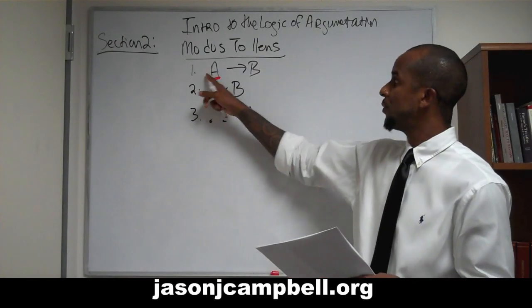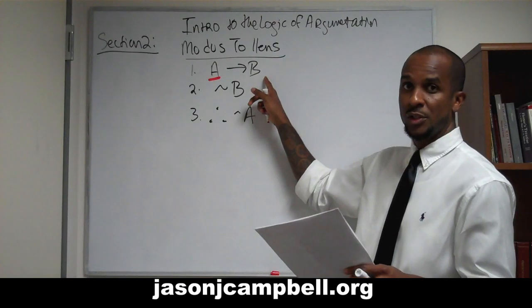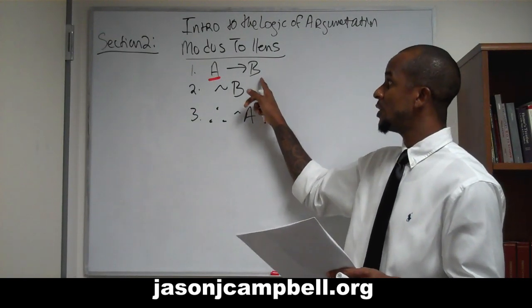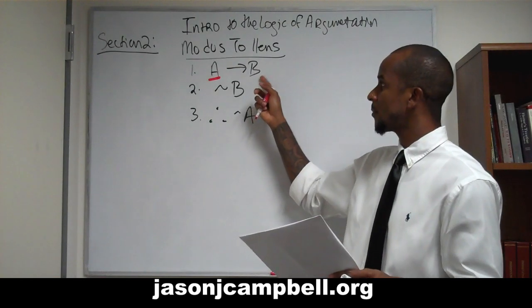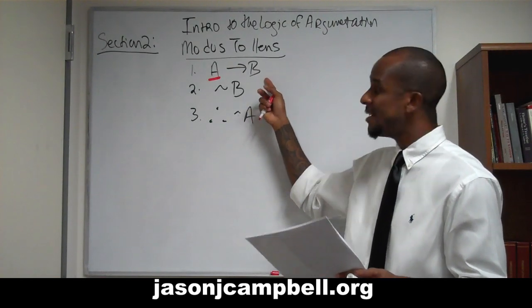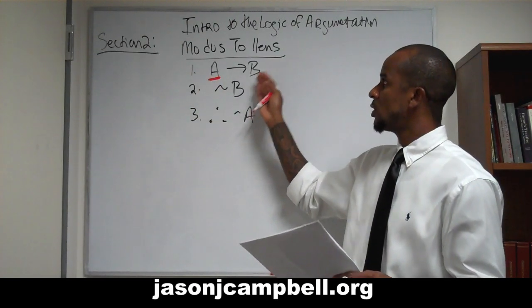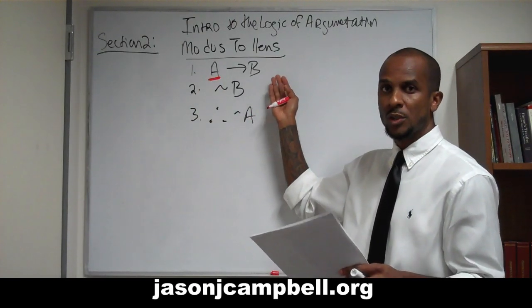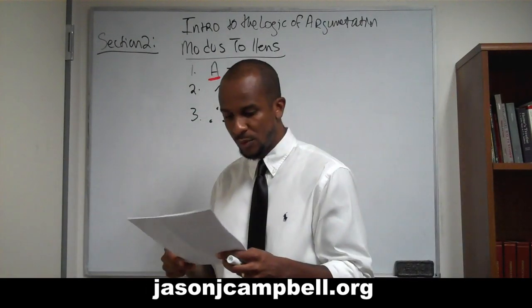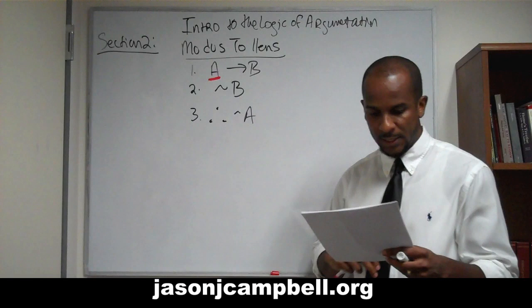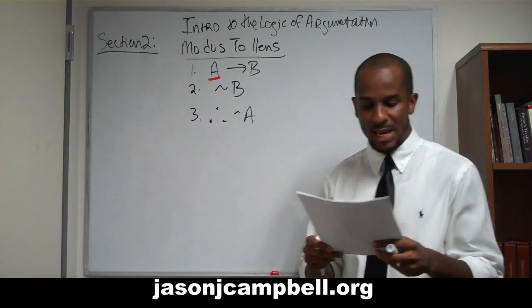This is just simple logic. If-then: whatever happens in the consequence occurs if the antecedent occurs. So for us to talk about what occurs, we need to know the conditions which allowed it to occur. If this thing happens, then this other thing happens. You can't break or separate the relationship between A and B.